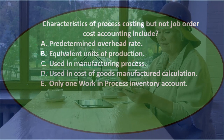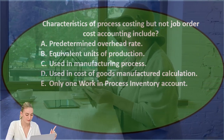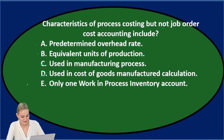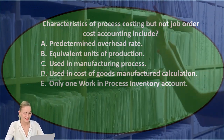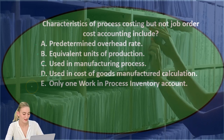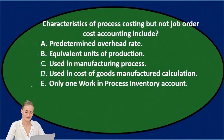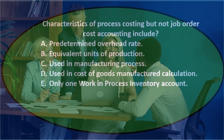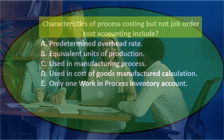Option E says only one work in process inventory account. In the job cost system there's only one work in process inventory account, whereas the process cost system may use more than one work in process account since there may be more than one process to track. So only one work in process is a characteristic of the job cost system, not the process cost system. It's not E.